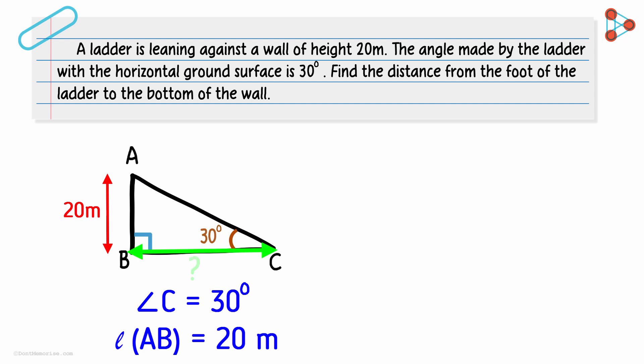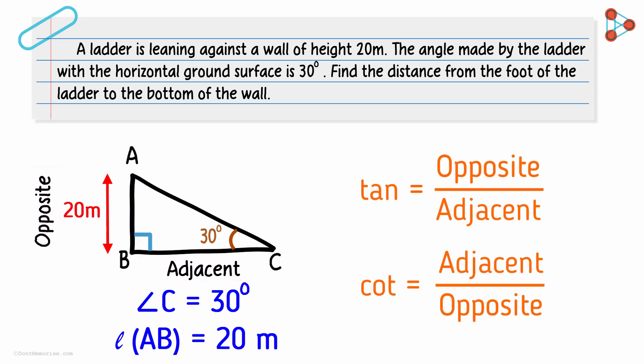Length of BC is what we want and the length of AB is what we have. They are opposite and adjacent sides of angle C. What does this tell us? It tells us that we should use that trigonometric ratio of angle C which involves opposite and adjacent sides. What will be that ratio? It will either be tan or cot because these two involve both opposite and adjacent sides of an angle.